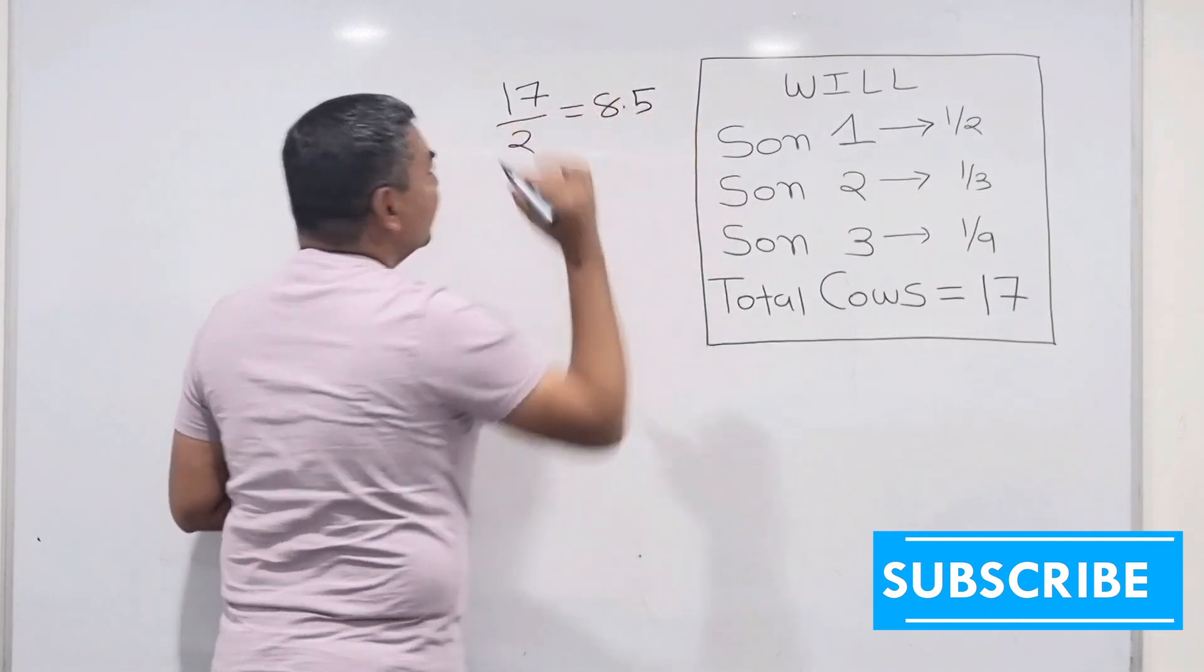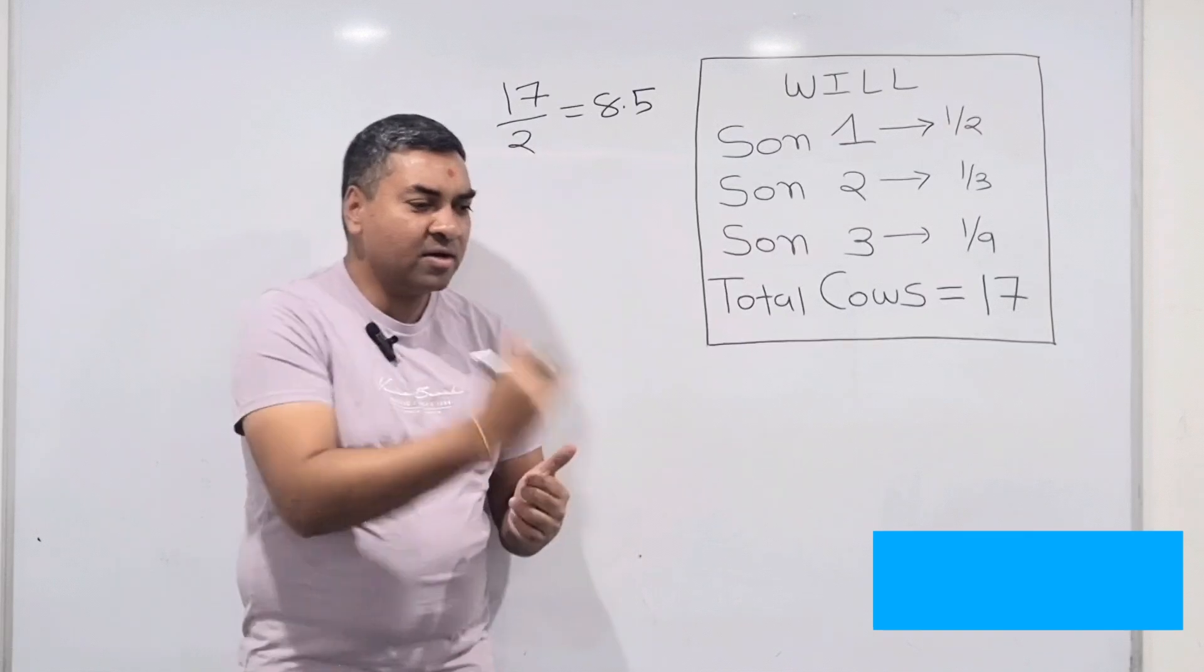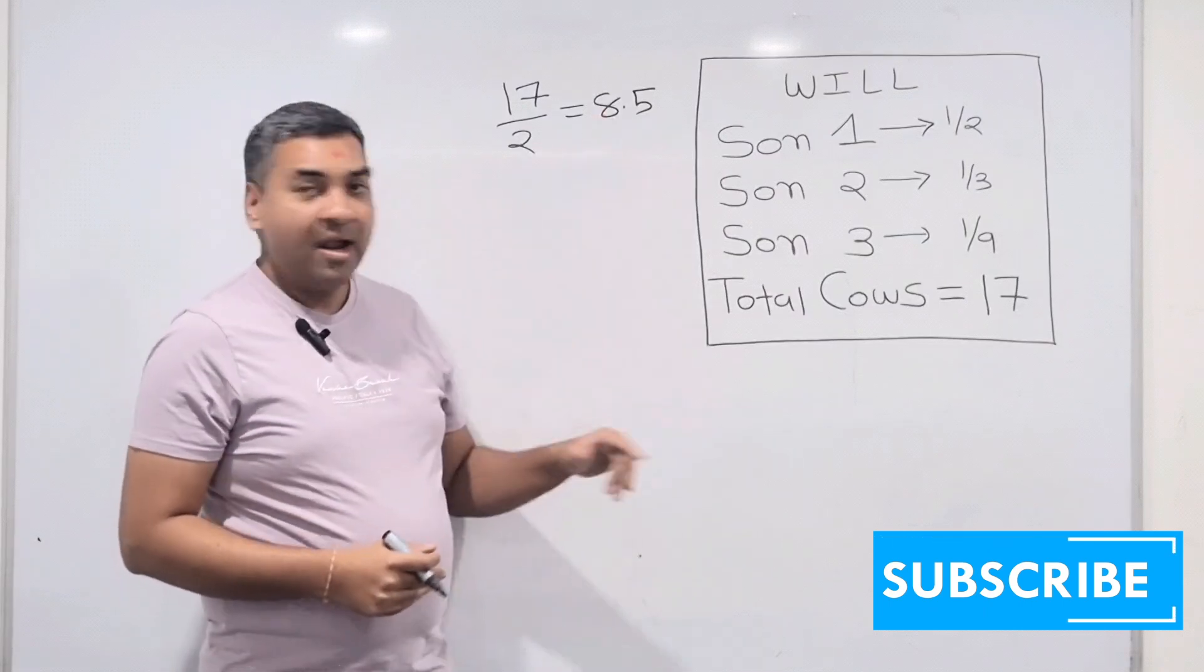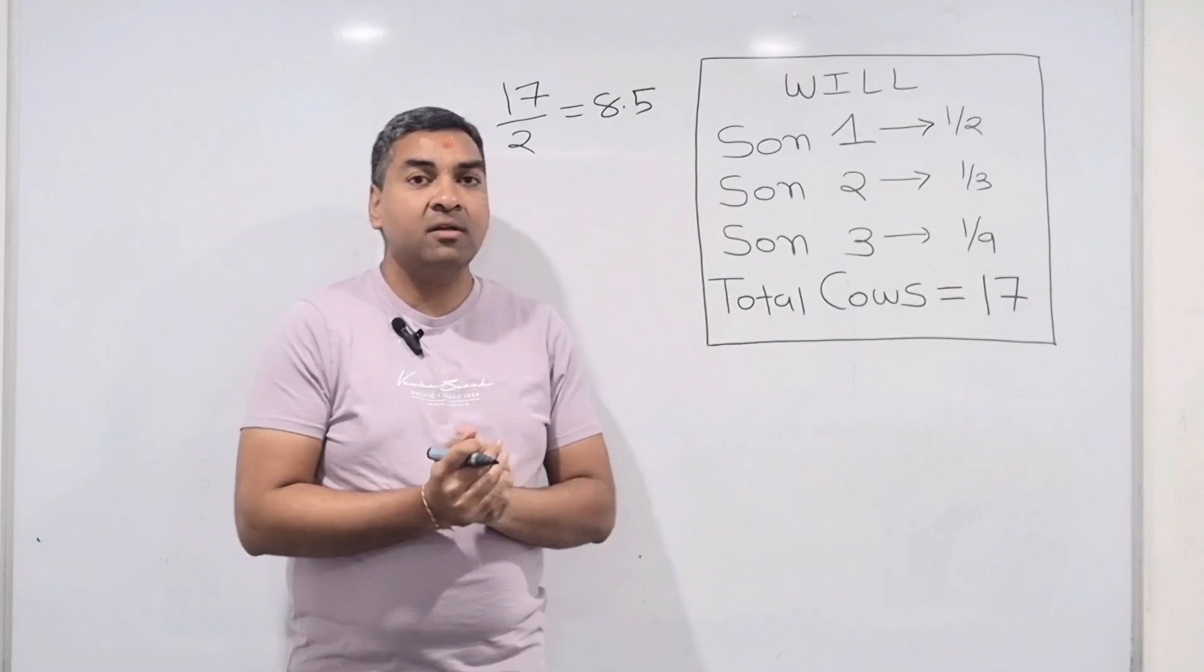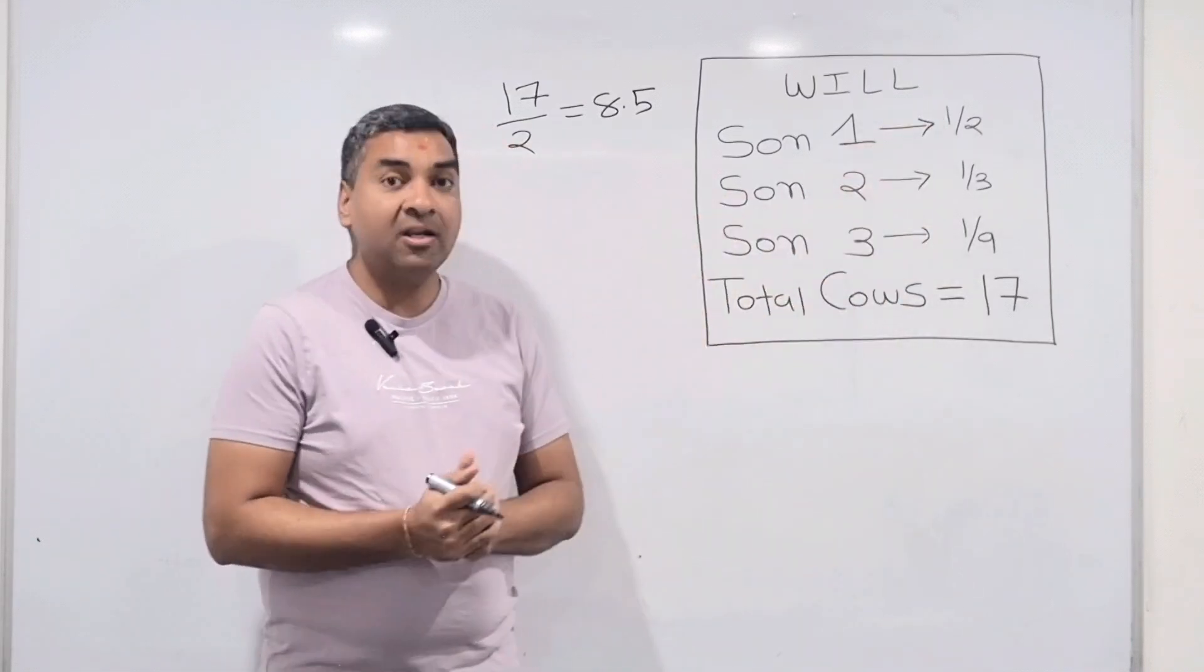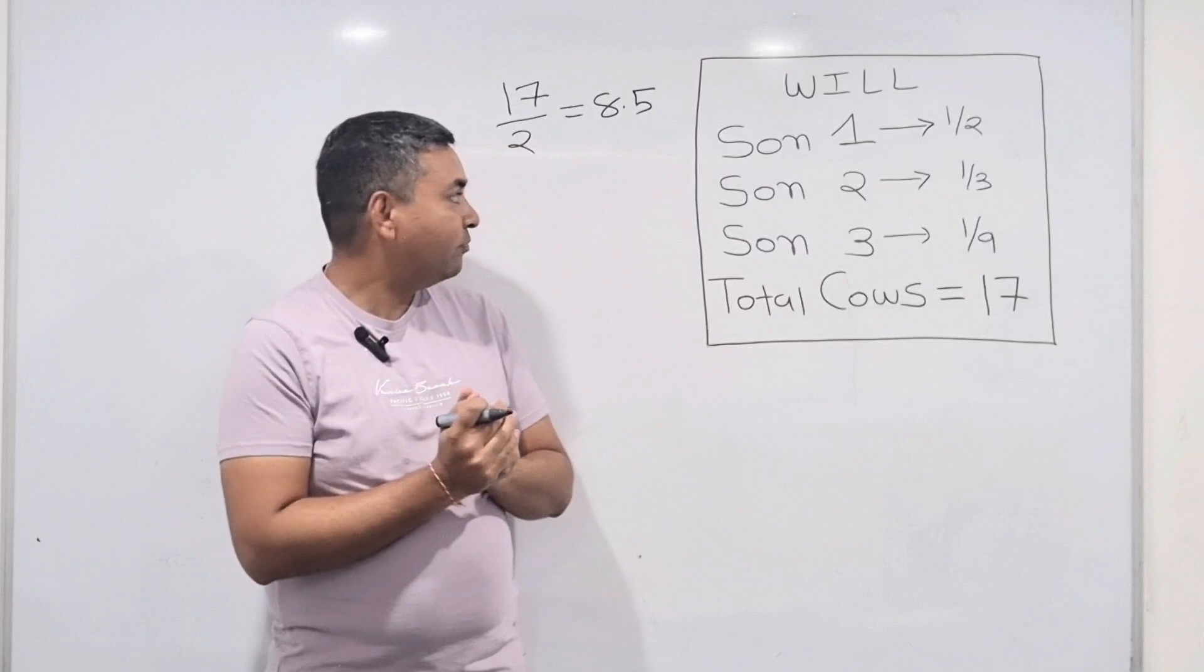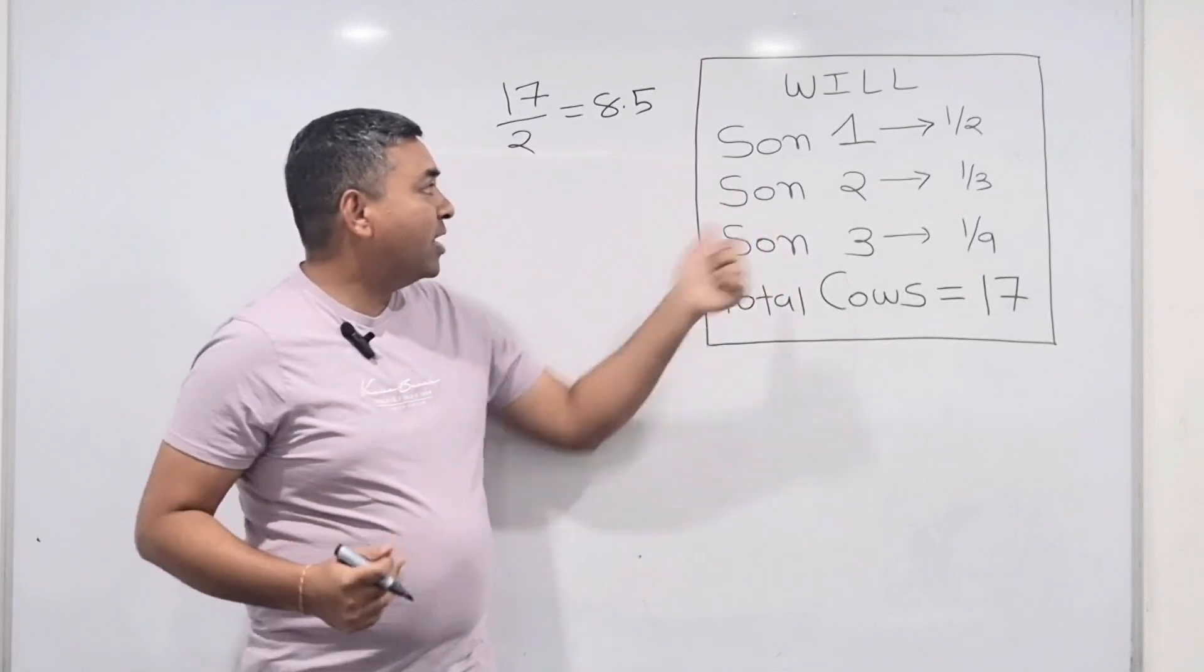Eight and a half cows - we cannot have half cows. We cannot cut the cows, that's not the way it should be distributed. All three sons were so obedient, they said okay we are going to divide only like this, but at the same time we are not going to cut the cows into half. So that was a big problem: how to divide that?